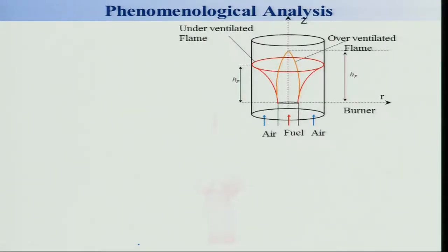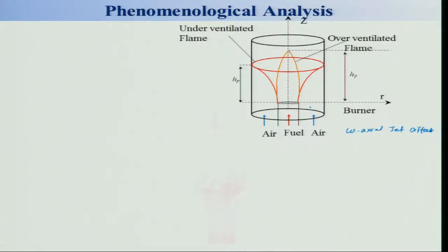Before getting into that, let us look at a co-axial jet diffusion flame. The fuel is in the center jet and there is an annular space in which air is present. If more air is there compared to fuel, you get a flame surface similar to a simple jet flame — a jet of fuel issuing into a quiescent atmosphere. But if the amount of air is less than the fuel, you get an under-ventilated flame shape, whereas the other is an over-ventilated flame.